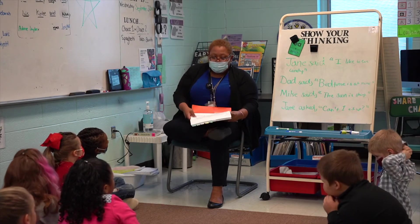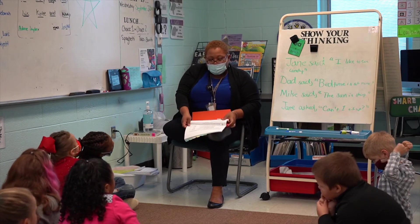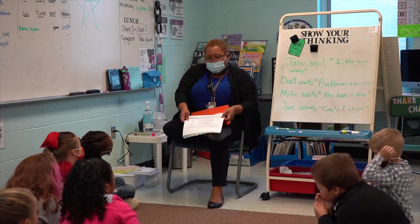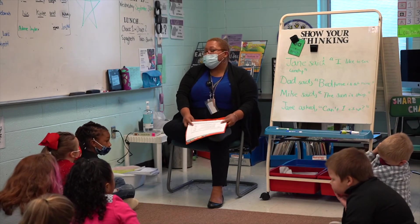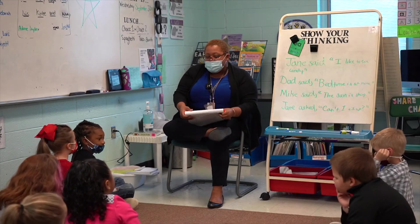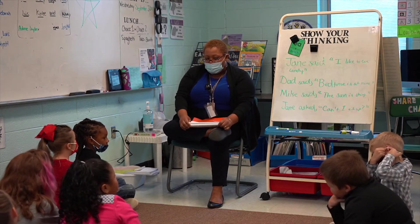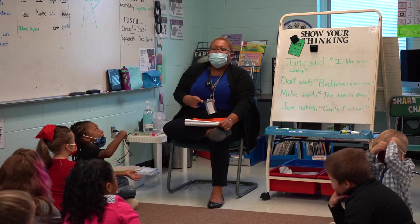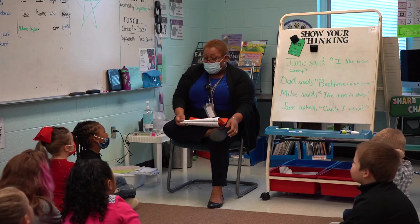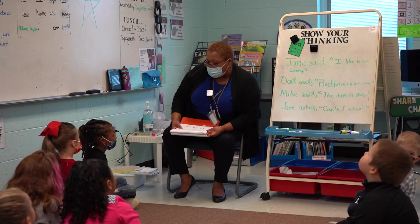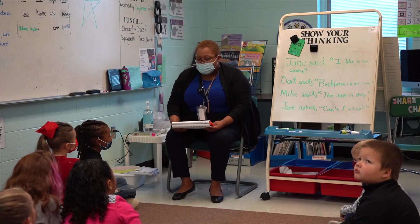Say 'spun.' Spun. Say 'spun' and change the 'p' to a 't.' Stun. Good. Say 'spot.' Spot. Change the 'p' to a 'w.' What word do we get? Swat — like you swat a fly. Say 'scope.' Scope. Now say 'scope' and change the 'c' to a 'w.' Slope.